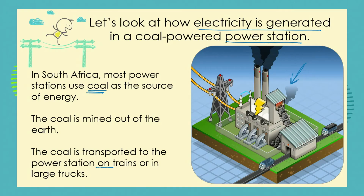First of all, the coal has to be mined out of the earth. The coal is mined and it is transported to the power station — in this case in large trucks, but sometimes from place to place on trains. It enters the delivery part of the power station. Here we can see the truck leaving empty, having piled all its coal up at the power station.